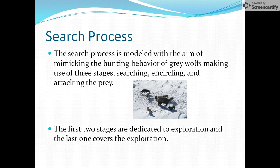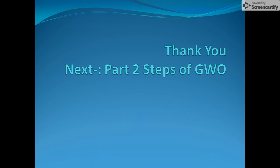Attacking the prey corresponds to the exploitation phase, and the responsibility of attacking belongs to the alpha wolf. In our implementation, we mimic this activity: we search for the goal, encircle it with search agents, and keep updating positions to move closer to the goal using alpha, beta, and delta agents. We update omega positions using alpha, beta, and delta. The mathematical modeling of these steps — encircling, searching, and hunting — will be discussed in the second part.